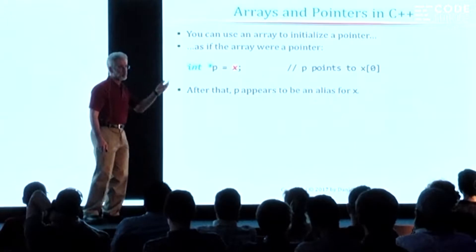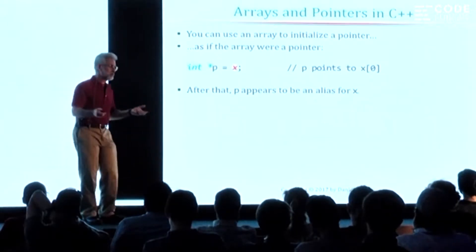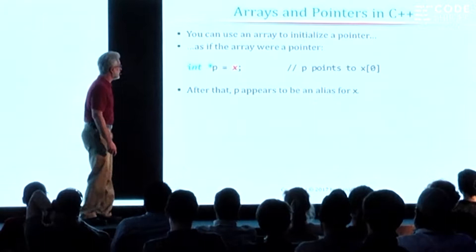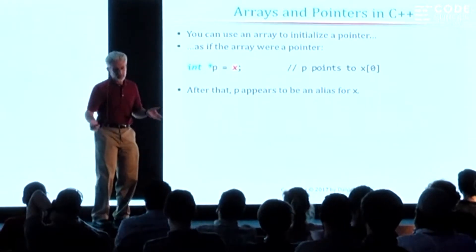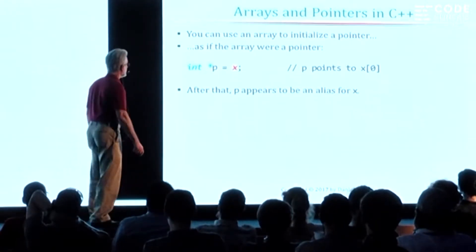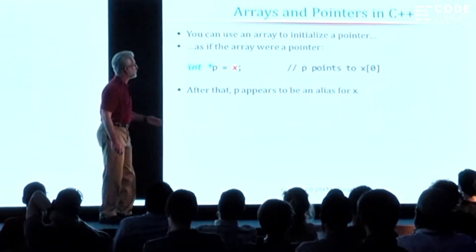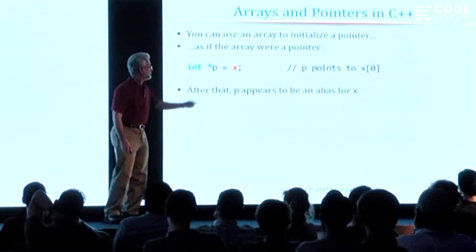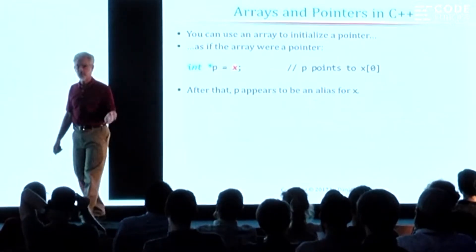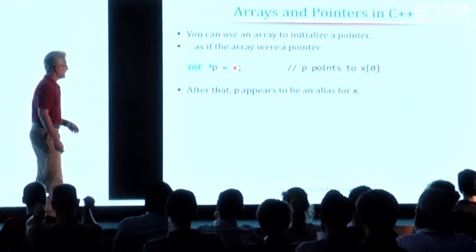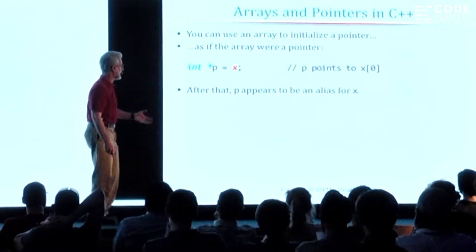On most people who program in C and C++, you get used to this fairly quickly. It's one of the things that makes C, C — this relationship between pointers and arrays. You can then go ahead and do things like initializing a pointer with the name of an array, and so after that, P and X are essentially aliases.